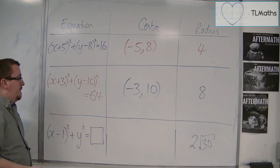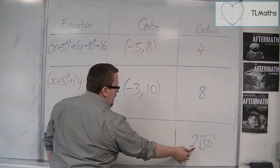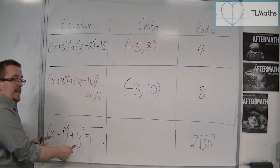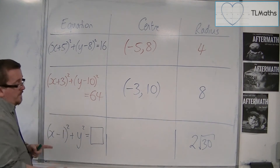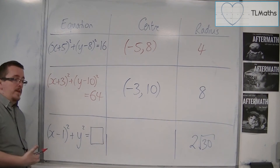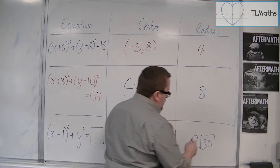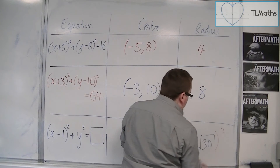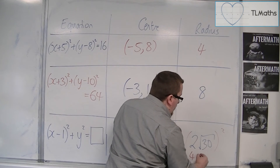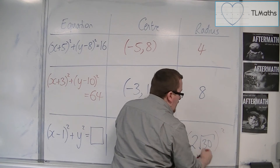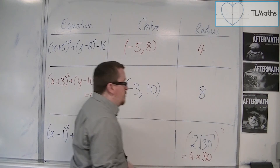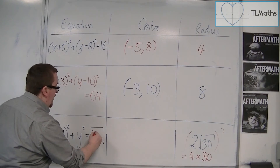Then finally, we have the radius given to us, so we need to put that into the equation. So 2 root 30 squared — if you think about squaring this, we've got 2 squared, so 4, times by root 30 squared, so 30. And you'd get 120. So this equals 120.